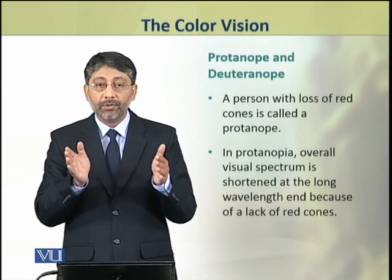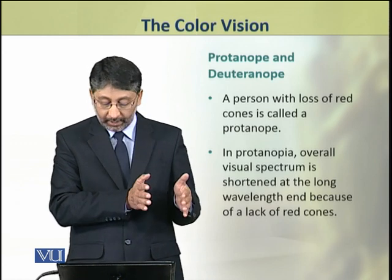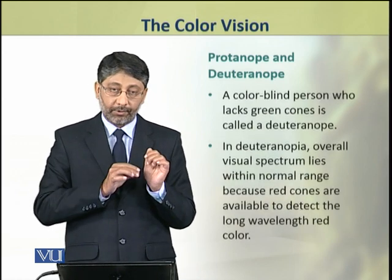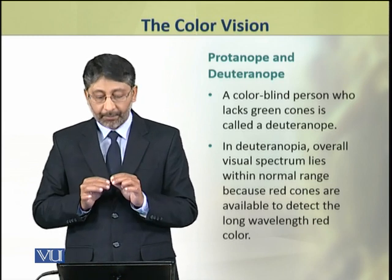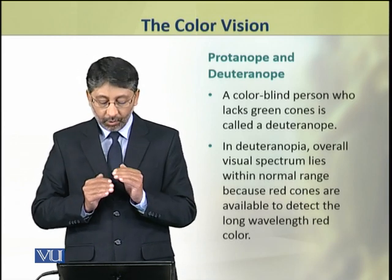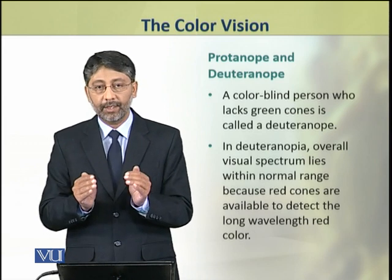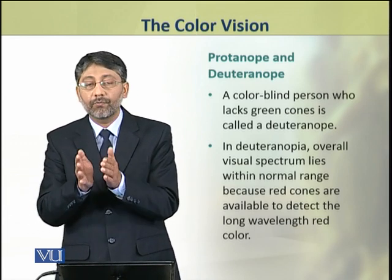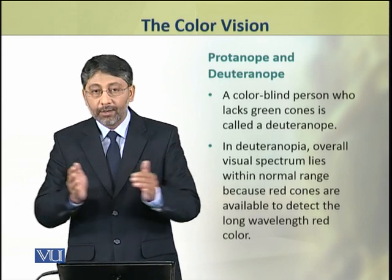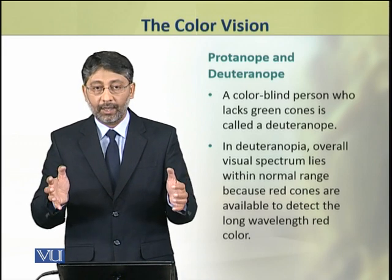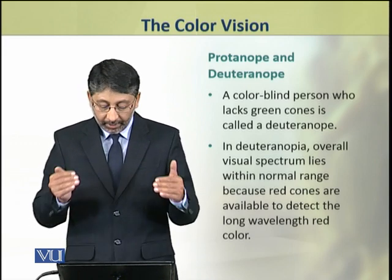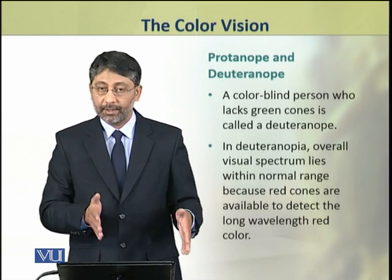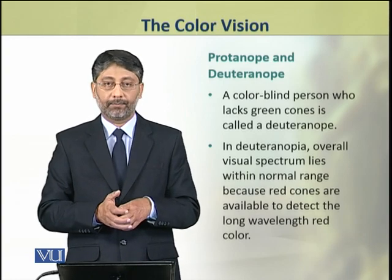A person who lacks green cones is called a deuteranope, and the condition is called deuteranopia. In deuteranopia, the overall visual spectrum lies within the normal range — the person can see blue and red colors — but there is a problem at the wavelengths corresponding to green in the middle. However, the overall color visual field in terms of wavelength range is not disturbed. This condition is called deuteranopia.